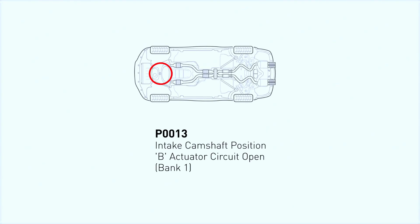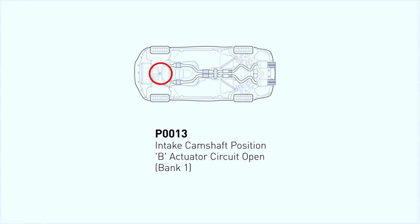A P0013 code refers to the B camshaft position actuator circuit on bank one. It's often related to the variable valve timing (VVT) system. Essentially, your car's computer has detected a problem with the VVT solenoid, which controls the timing of your engine's intake and exhaust valves. So let's start by diagnosing the issue.